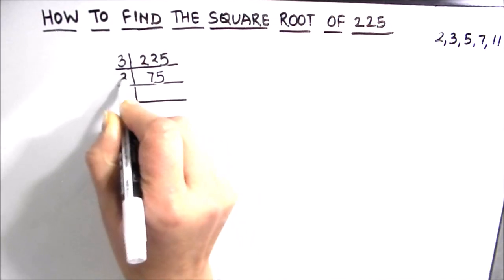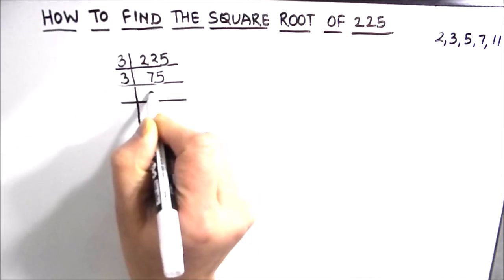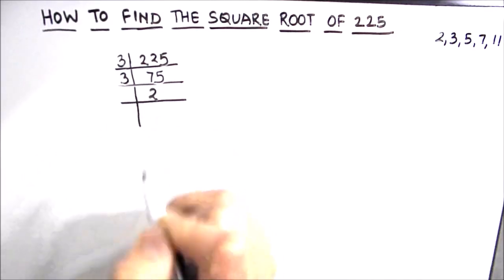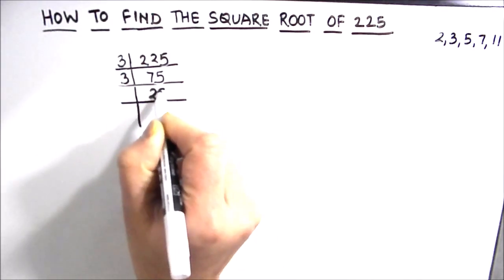Again we can use 3 to divide 75. 3 times 2 is 6, 1 is remainder, this becomes 15, 3 times 5 is 15.